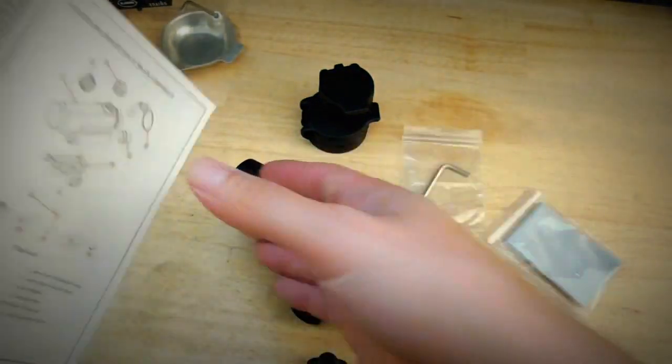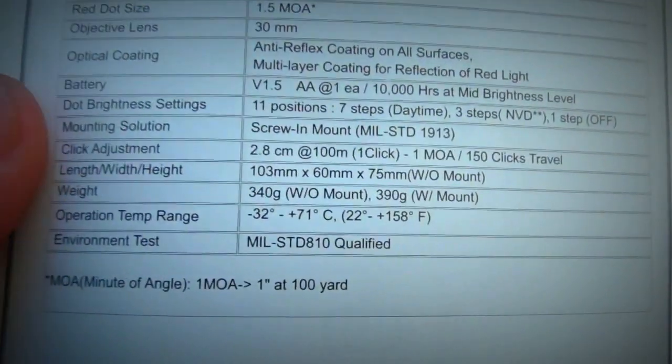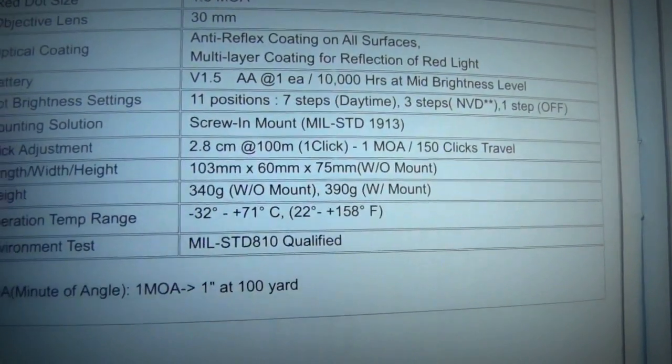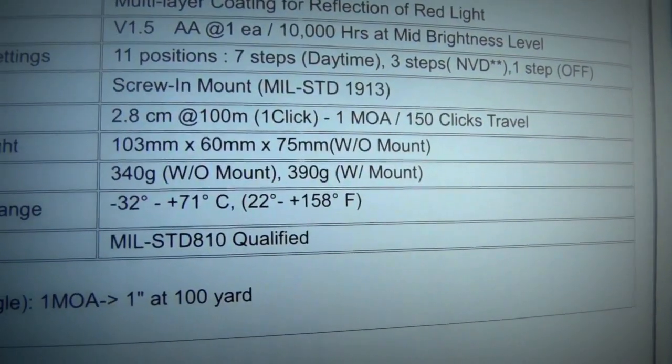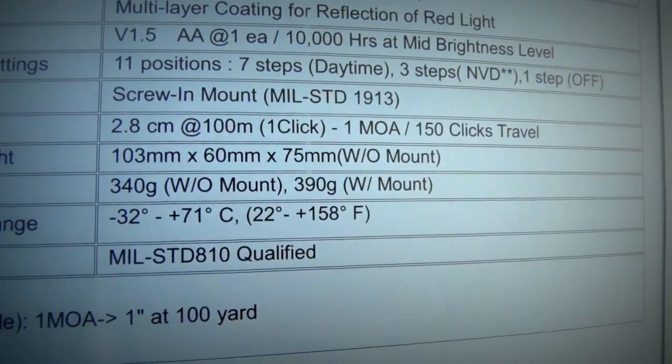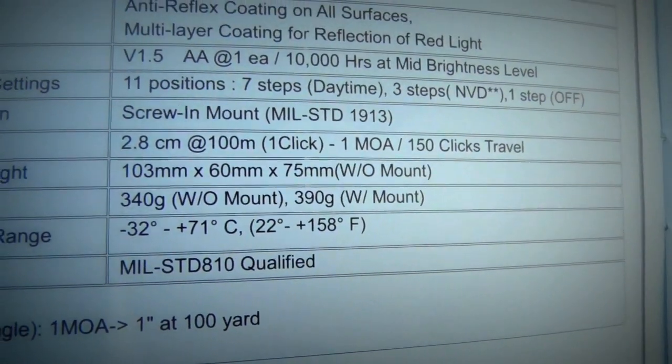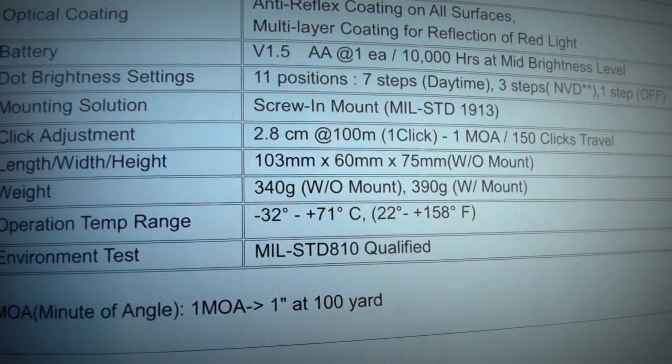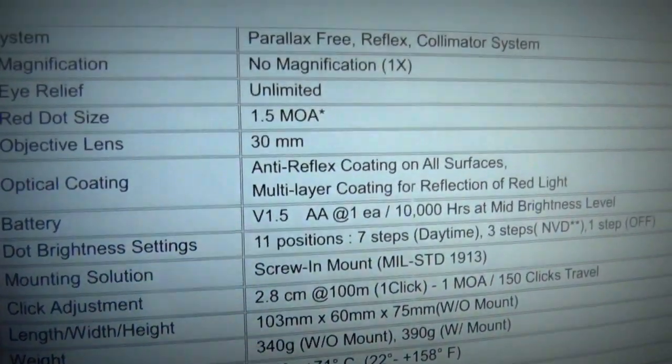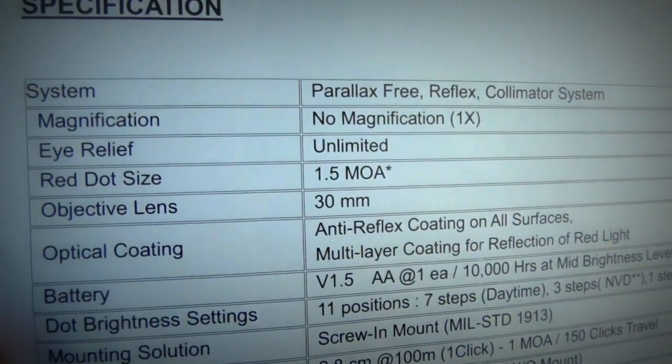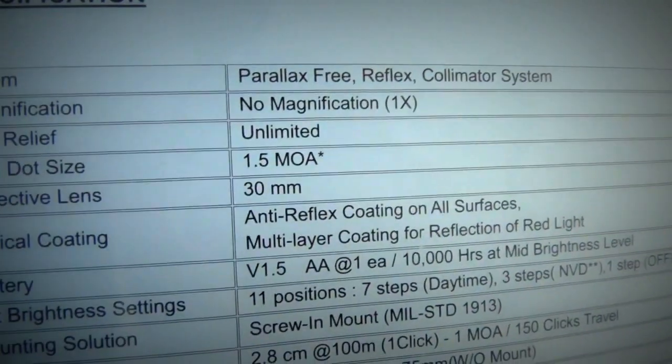It's MIL-810G, MIL-STANDARD-810G qualified. We have some specifications that they try to adhere to for the environment test. Minus 22 to 158 degrees Fahrenheit. That's excellent operating temp range. Weight, about 14 ounces. It's a standard 30 millimeter tube. 1.5 MOA dot. Parallax free, of course. It's a red dot.